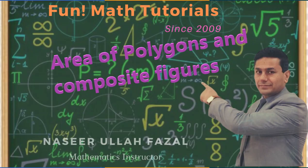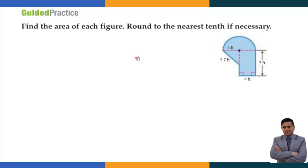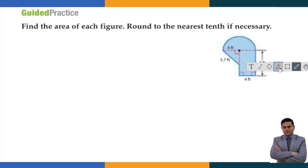We have a composite figure made of a semicircle, a triangle, and a rectangle. We need to find the area of this composite figure. I can find the area of the semicircle using the radius, the area of the rectangle using length times width, and the area of the triangle if I have the base and height. Since the triangle has a 90 degree angle, I'll work it out separately.